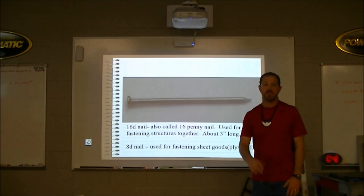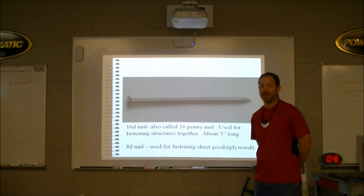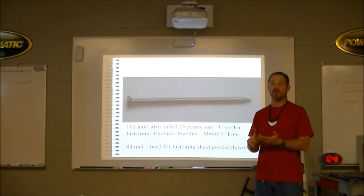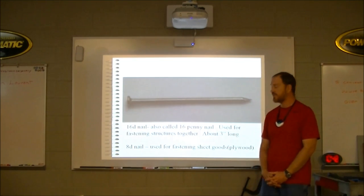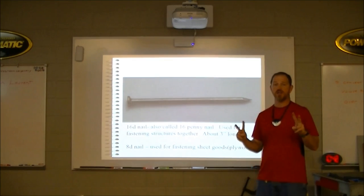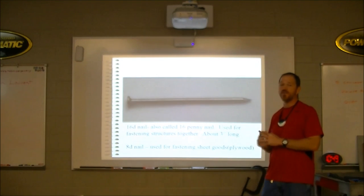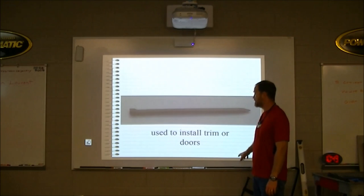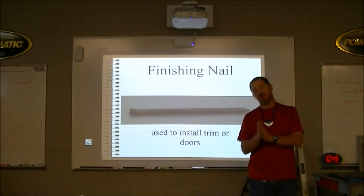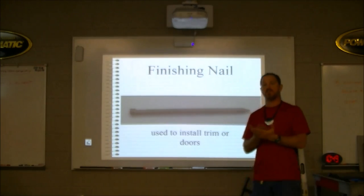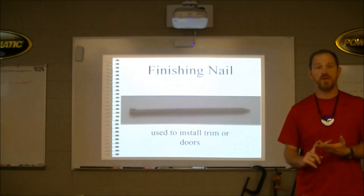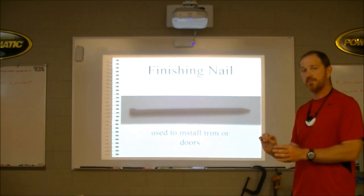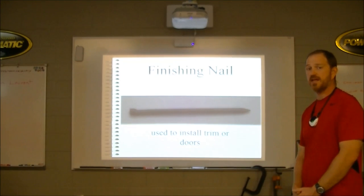A sixteen-penny nail is used for fastening structures together — this gives a building its strength. You'd use these nailing two-by-fours, two-by-sixes, two-by-eights, two-by-tens, and two-by-twelves. For plywood or OSB sheet goods you'd use an eight-penny nail. The 'D' stands for penny. A finish nail has a tiny head and is used to install trim, crown molding, baseboard, and window casing. That tiny head is meant to be recessed below the surface so putty can be applied and painted over.